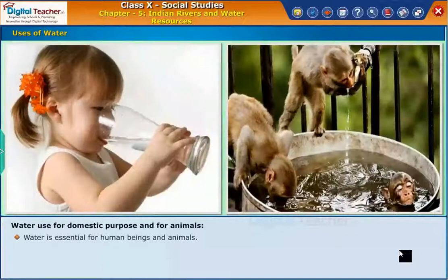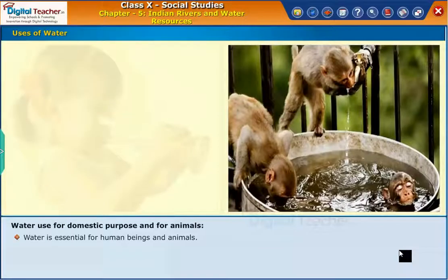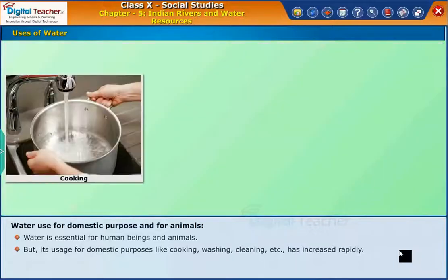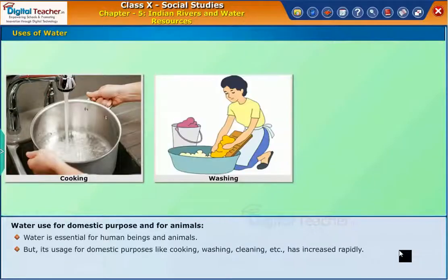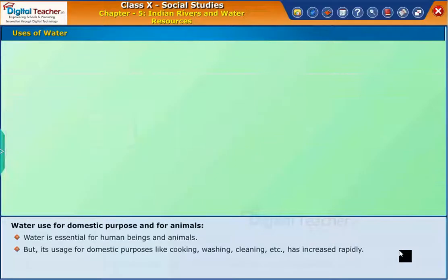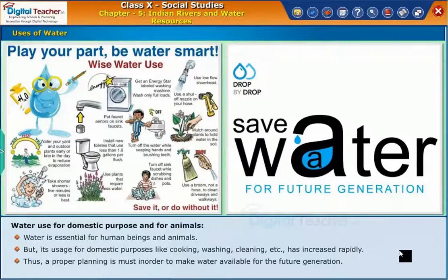Water is essential for human beings and animals, but its uses for domestic purposes like cooking, washing, cleaning, etc. has increased rapidly. Thus, proper planning is a must in order to make water available for the future generation.